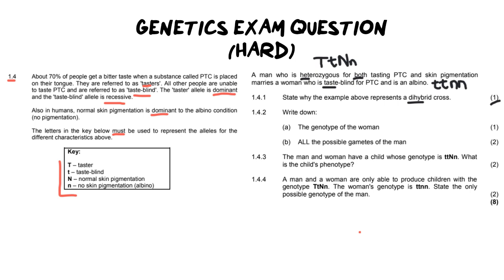Moving on to 4.1.2, write down the genotype of the woman. So we've already done that which is great. It means we don't run the risk of getting that wrong and just make sure that you see the word genotype and you don't by accident write the phenotype.